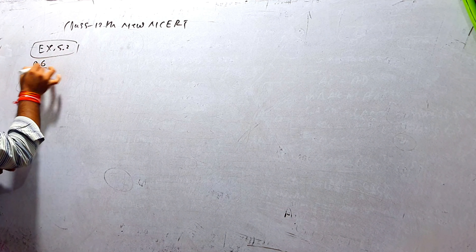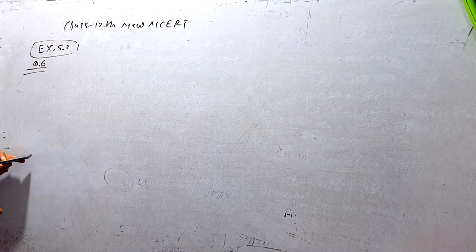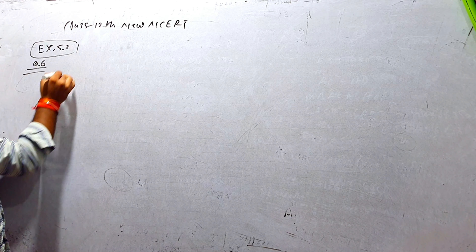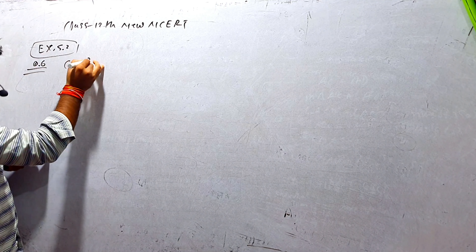Question number 6: differentiate cos(x³) into sin²(x⁵). इसको करना है chain rule से। दो functions हैं — एक cos(x³) और एक sin²(x⁵) — और हमारे पास formula है।